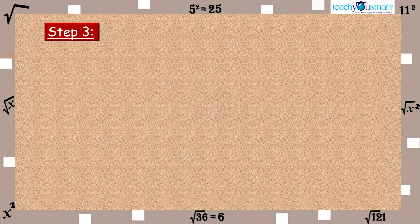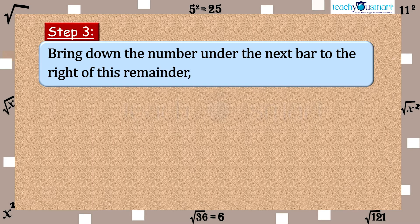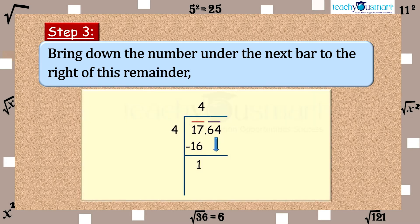Step 3. Bring down the numbers under the next bar to the right of this remainder. We get 164.